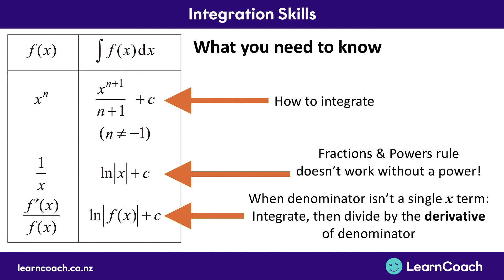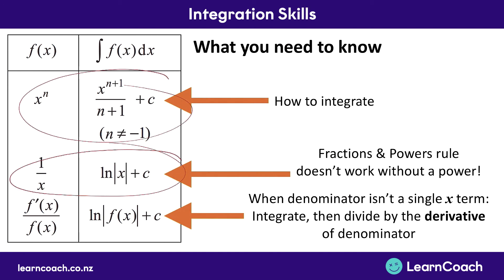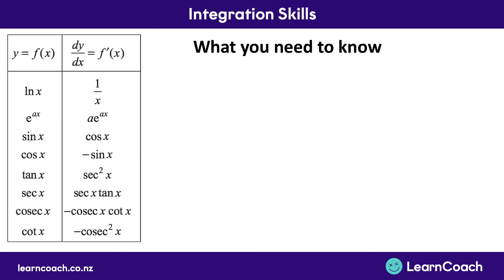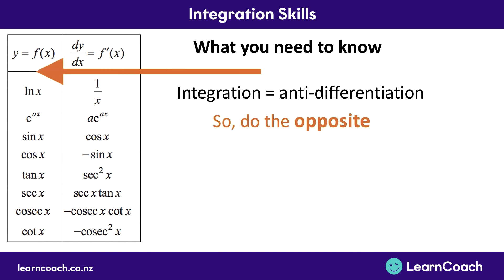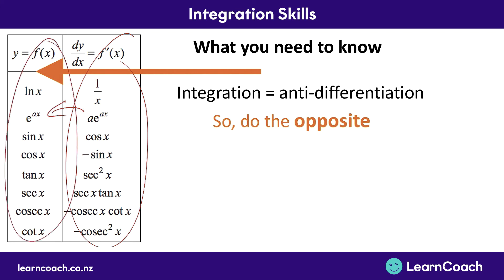So this covers all of the new skills you need for level 3: how to integrate fractions that don't work with the power rule because there's no power on the bottom, and when the denominator is more complicated than a single x term. Remember from your differentiation table, you use it in the opposite direction — from the right-hand side back to the left-hand side. And remember that all negative terms can just be placed on the opposite side of the table if needed. These are all the new skills you need for level 3.